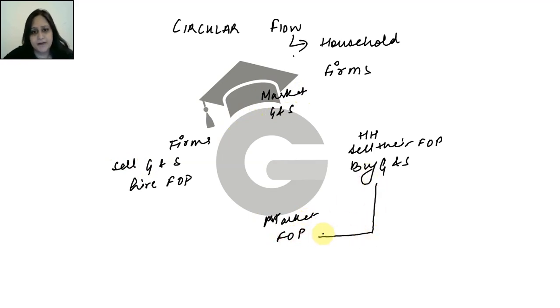So, households provide their factors of production. They give land, labor, capital. Those factors of production will be hired by firms. So, those factors of production will move to firms.